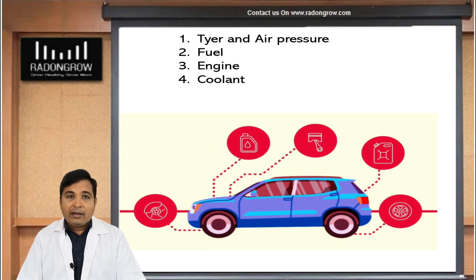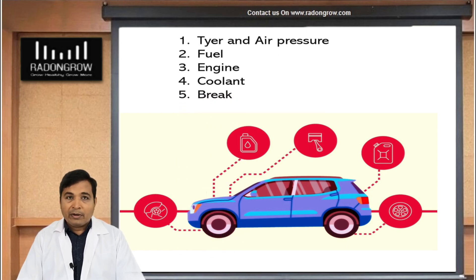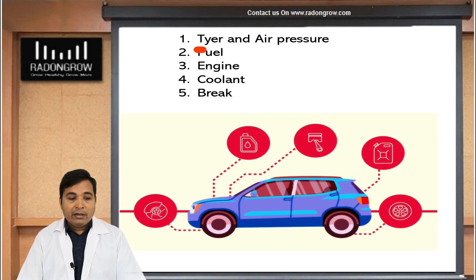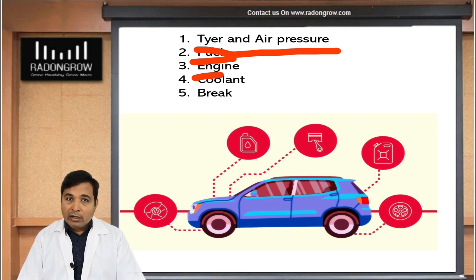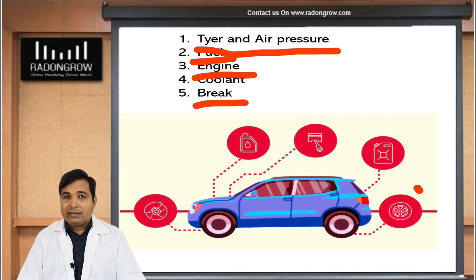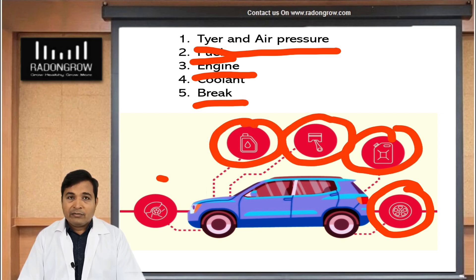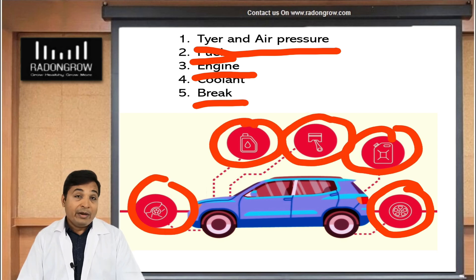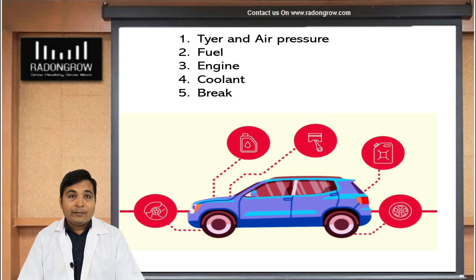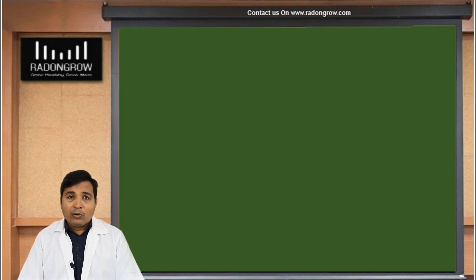You also need sufficient fuel, a proper engine, coolant, and brakes. These kinds of parameters are required to run a car. In the same way, we need to maintain a minimum of five parameters to grow a plant.